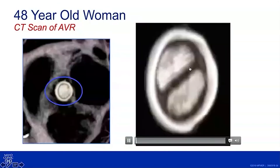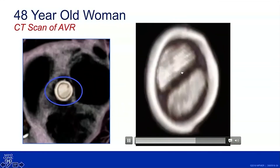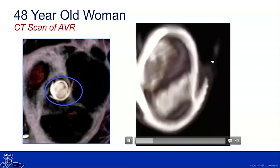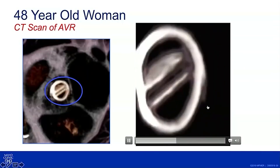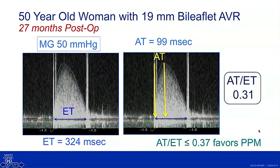That was her pre-dismissal echo. When we brought her back, we did CT scanning to confirm the discs were moving normally — and they were — with no evidence of clot or other material around the valve. She underwent stress testing and, while her VO2 was below average, she wasn't felt to have an abnormal cardiac response at that time. The mean gradient of 43 was actually the lowest we observed; after recovery it went up rather than down, staying around 50.